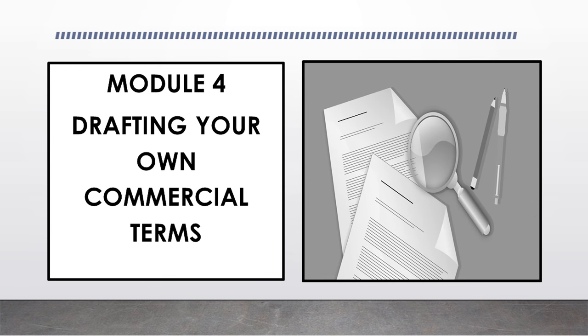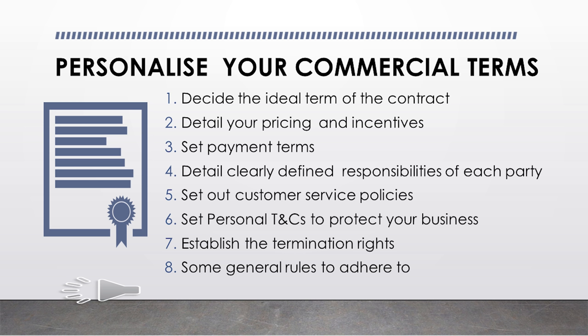In the last module we covered basic contract understanding and what needs to be included to make it legally binding. We're now going to talk about how you can personalize your commercial terms as part of your contract. The first point we'll cover is how to decide and include the ideal term for the contract, and this will vary based on each individual contract.